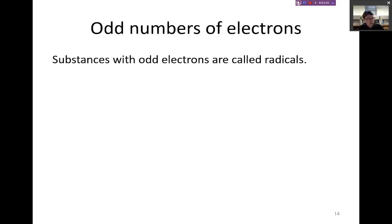So let's talk about odd elements with odd numbers of electrons. We tend to call those substances radicals or free radicals and you can find them in car exhaust in the form of nitrous oxide or nitrogen dioxide.